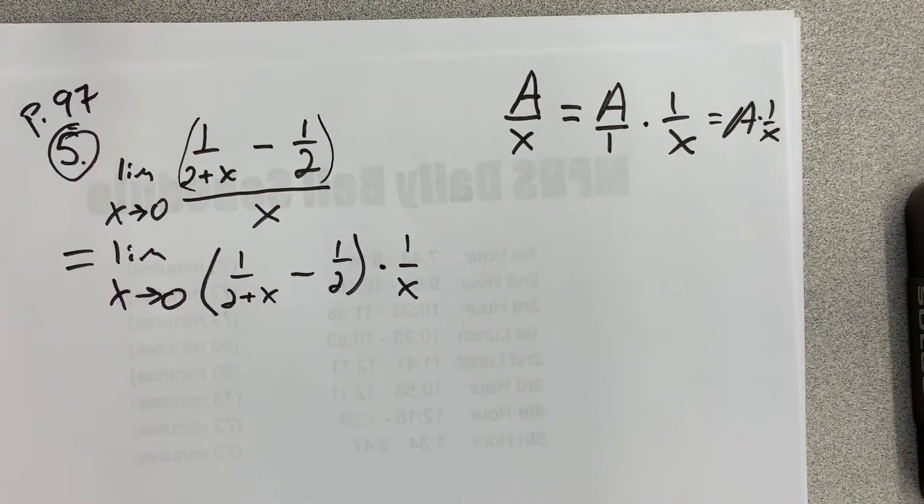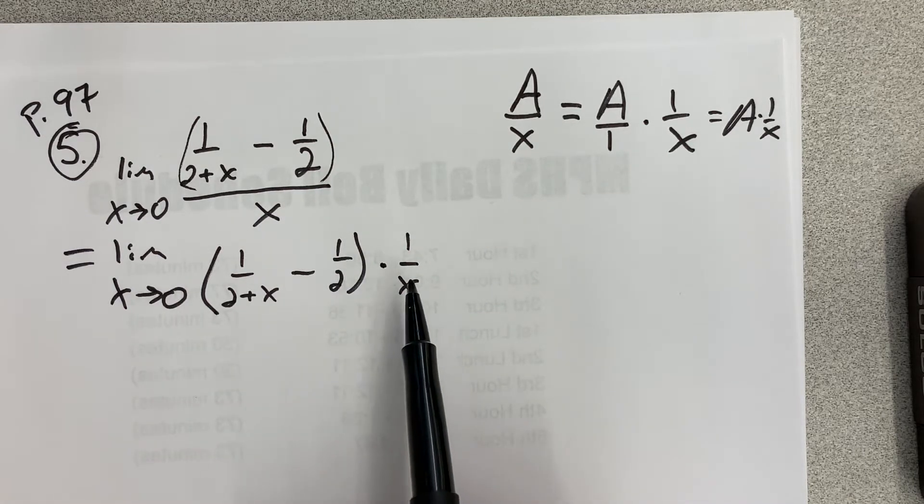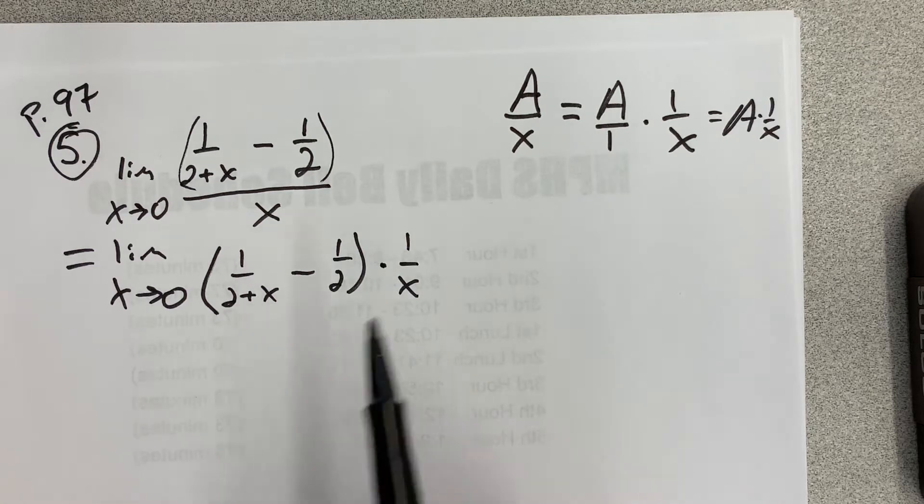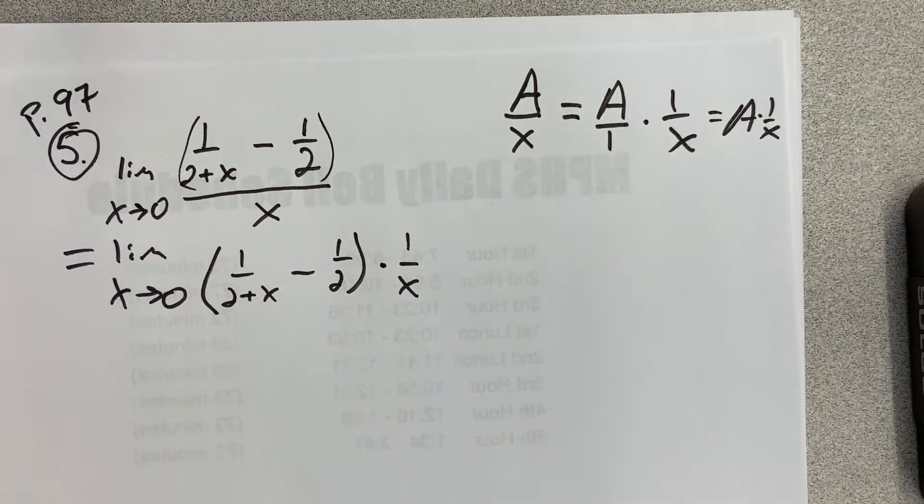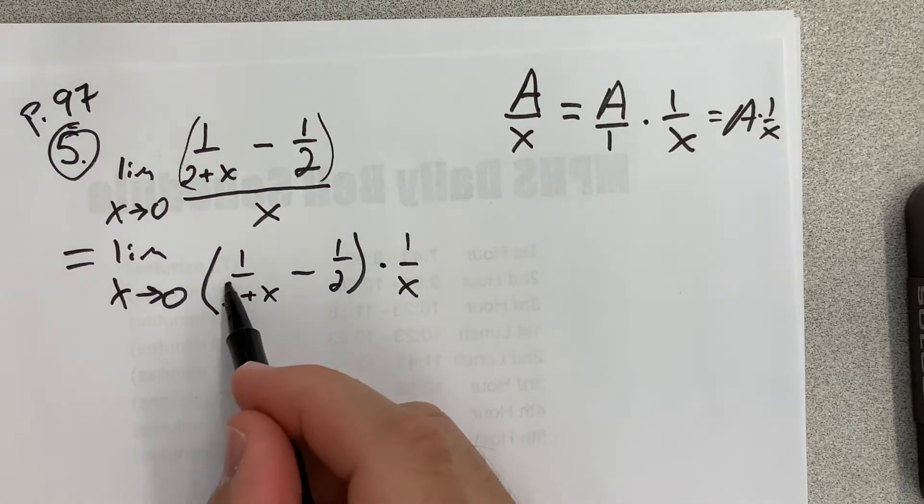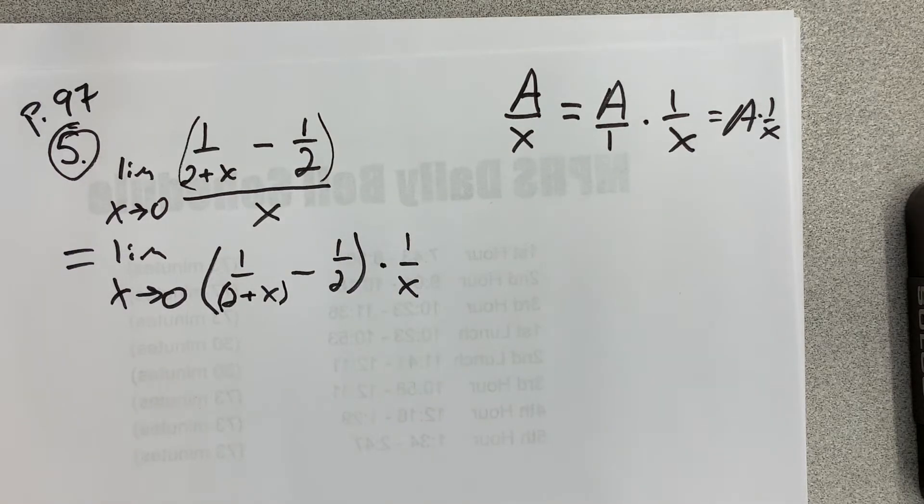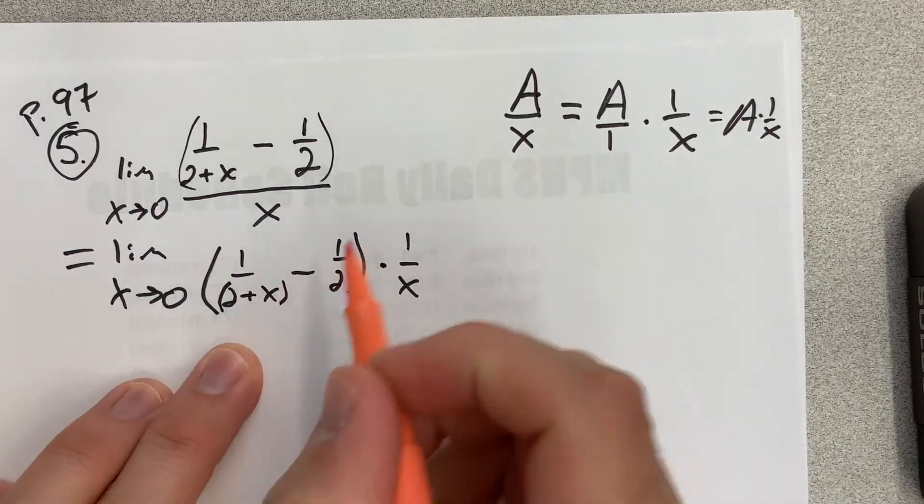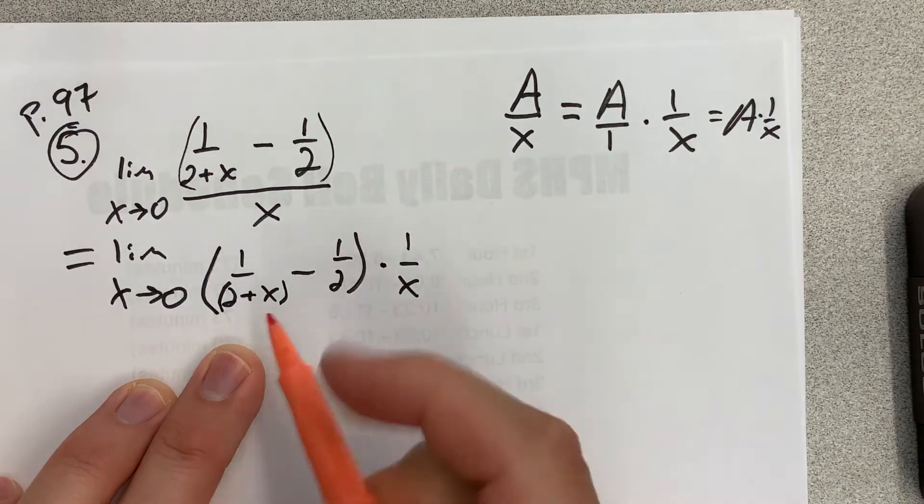This does not fix the problem because if I plug in 0, I still get a divide by 0 error. So I still got to keep working on this. My technique is going to be common denominator. That's sort of my only option. I can't factor and simplify because there's nothing to factor. I'm ignoring the 1 over x for now. I'm just working on these two fractions here.